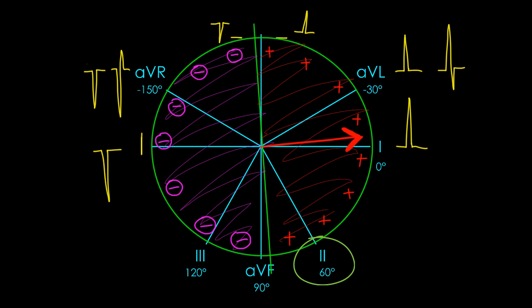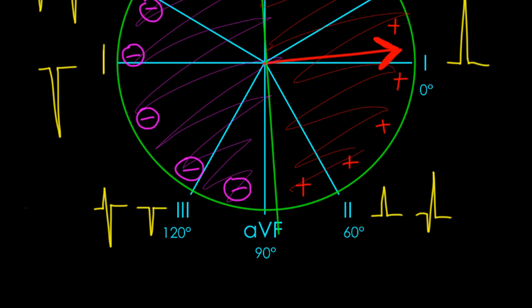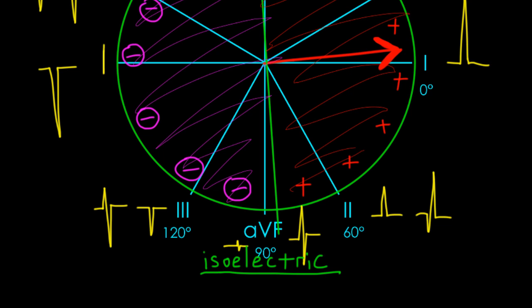Looking in lead 2, because it's still on the positive side of the semicircle — the axis is still generally moving toward it — we'd get a positive deflection, though pretty small. Similarly, lead 3 would look pretty similar but slightly negative. In lead AVF, which is oriented almost exactly perpendicular to where the axis is pointing, we'd get a QRS complex that's close to net neutral — what we call isoelectric. Every axis has two isoelectric points oriented 90 degrees in either direction. When looking at a patient's limb leads to find the axis, finding a lead where the QRS looks isoelectric tells you the axis points exactly 90 degrees away from it.